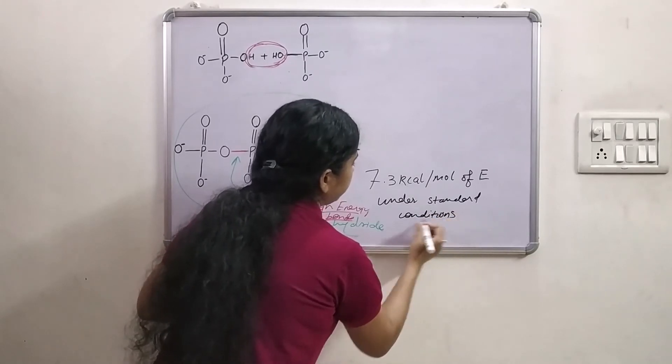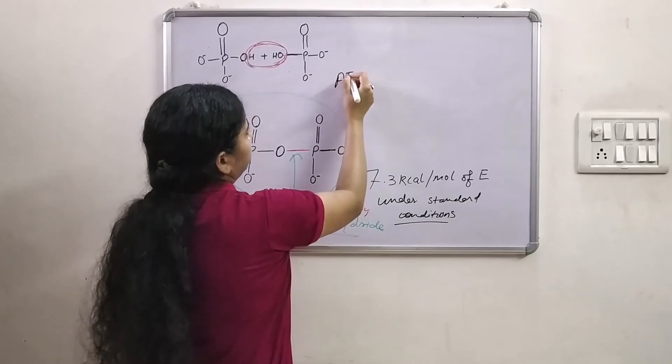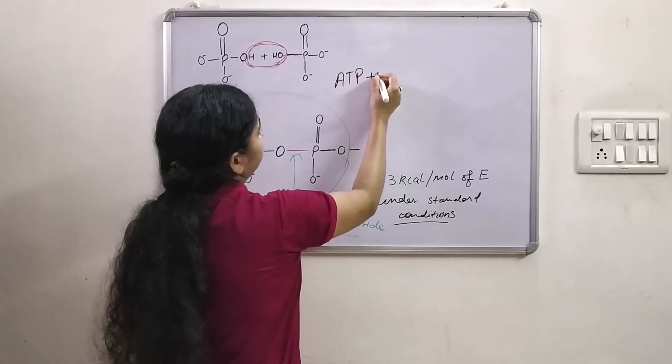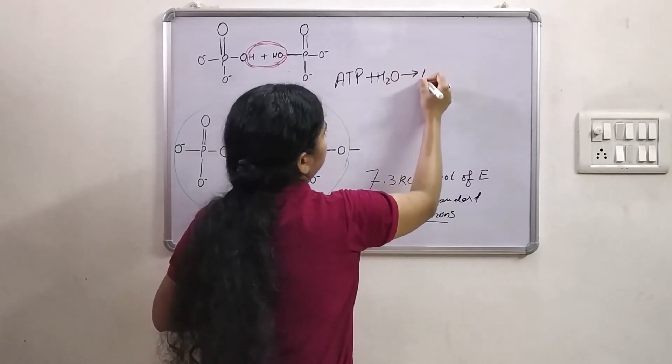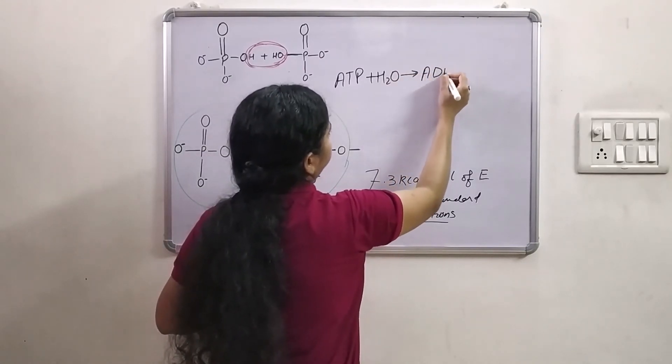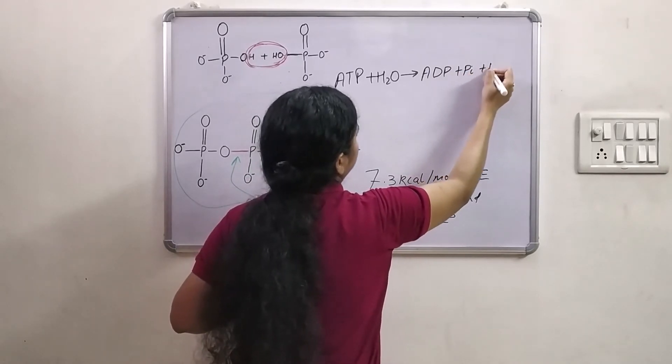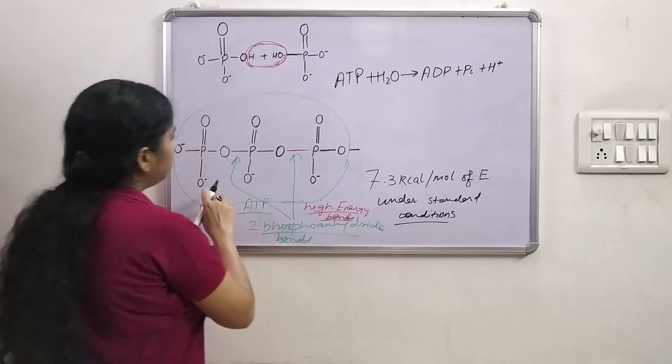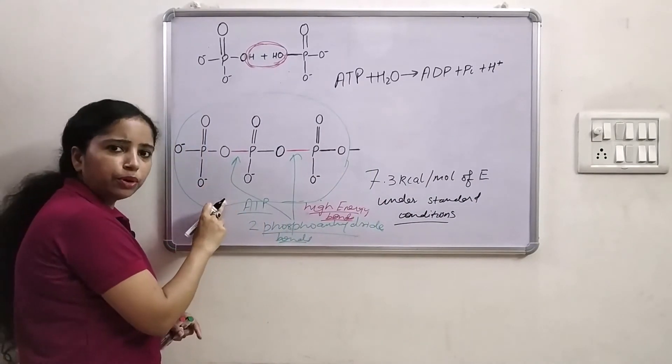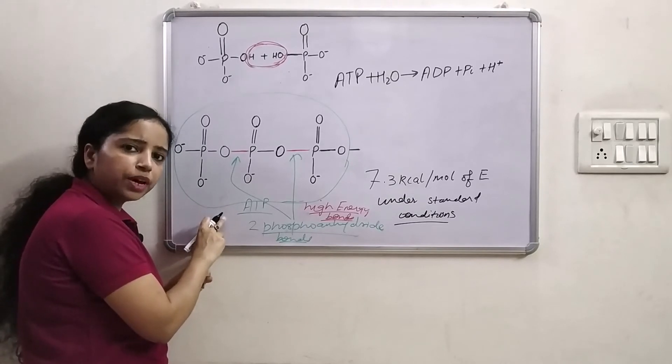And this can be written as ATP plus H2O because it is hydrolysis gives ADP plus pi plus H+. Usually the terminal phosphoanhydride bond hydrolysis to supply energy to the energy requiring reactions.